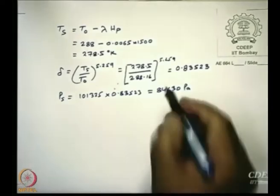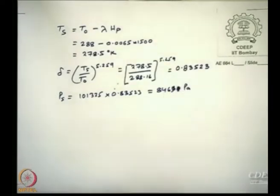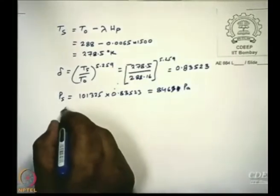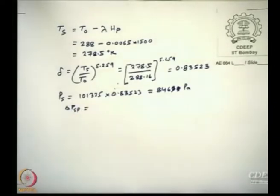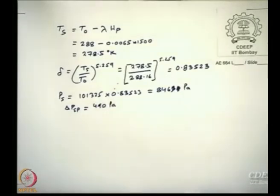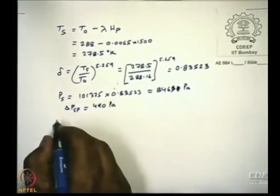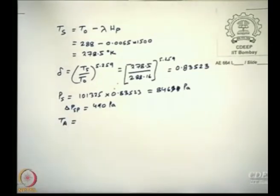So therefore what is the value of P_S? That will be 101325 times 0.85253. So this is the value of delta.